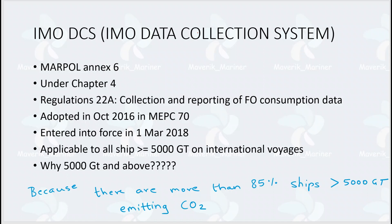IMO DCS is applicable to all ships greater than or equal to 5000 gross tonnage on international voyage. Why 5000 GT and above? The reason is that more than 85% of ships which are greater than 5000 GT are on international voyages and are continuously emitting CO2. By restricting these ships, you considerably reduce CO2 emission.